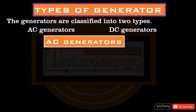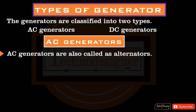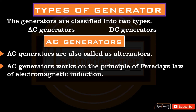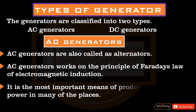AC generators are also called alternators. AC generators work on the principle of Faraday's law of electromagnetic induction. They are the most important means of producing electrical power in many places.